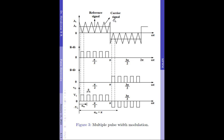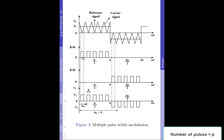Therefore, the carrier signal frequency is higher than the reference signal frequency. We should also note that the carrier signal now overlaps the reference signal multiple times within one half cycle. Therefore, multiple pulses will be created within one half cycle, and hence the name Multiple Pulse Width Modulation Technique. The number of pulses generated per half cycle is directly equal to the number of times the reference signal and the carrier signal overlap. The frequency of the carrier signal determines the number of pulses per half cycle, and the number of pulses per half cycle is usually denoted by P.